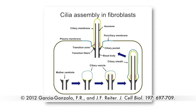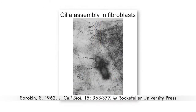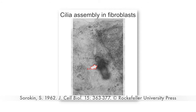Most vertebrate cells form a primary cilium, but there appear to be two distinct pathways of cilia assembly. In some cell types, such as fibroblasts and smooth muscle cells, ciliogenesis begins intracellularly, with the formation of a large ciliary vesicle at the mother centriole.